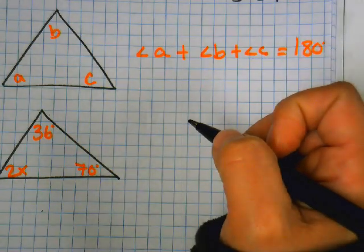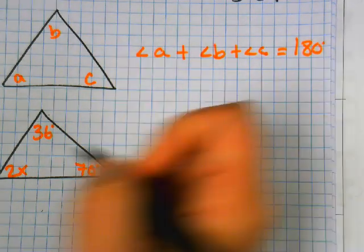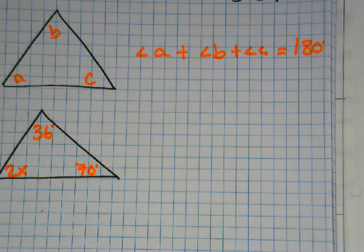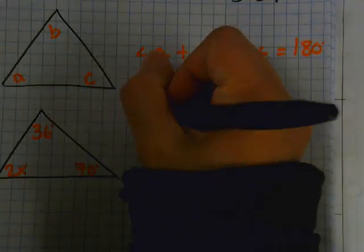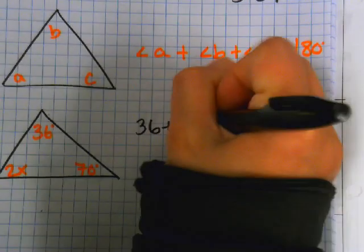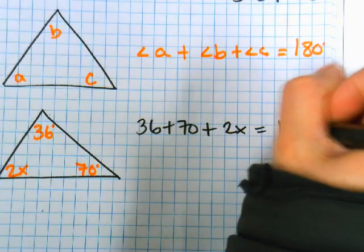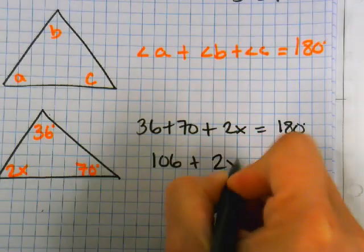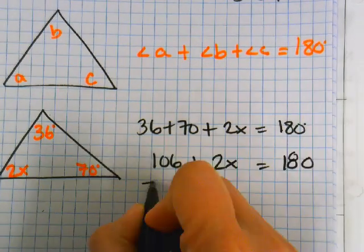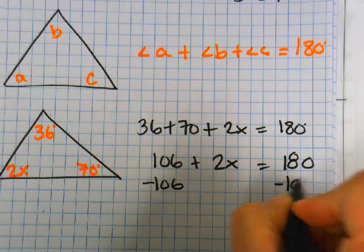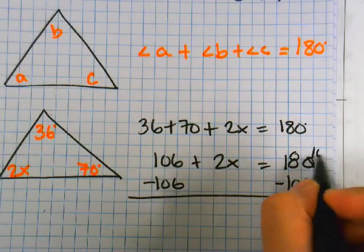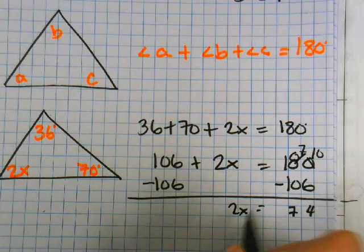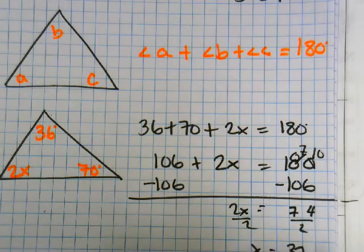37. 37? Yep. Anthony confused? I'll help you. Wait, I know this one. 106 plus 2x equals 180. Divide by 2, divide by 2, x is 37. Yep. Good.